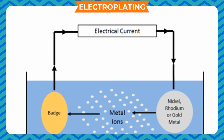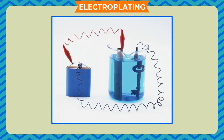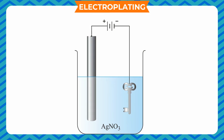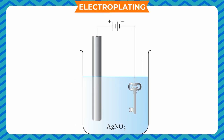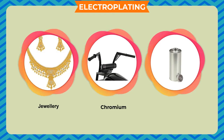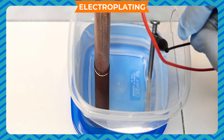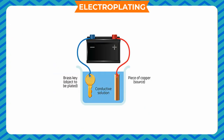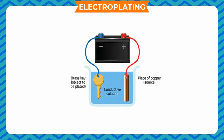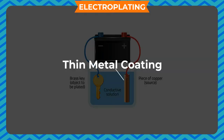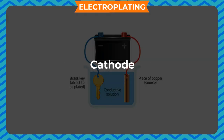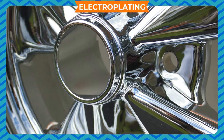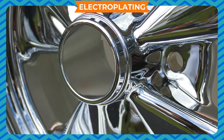Electroplating is an application of electrolysis. In the process of electroplating, a thin layer of metal — generally an expensive one — is coated on an inferior quality metal. Some common electroplated articles are jewelry, chromium-plated motorcycle handlebars, tin-plated cans, etc. Electroplating is done to protect the metal from corrosion or to make it look attractive. For electroplating, the metal to be electroplated is connected to the anode. The article on which a thin metal coating is to be applied is connected to the cathode. The electrolyte should be a solution of a salt of the metal.